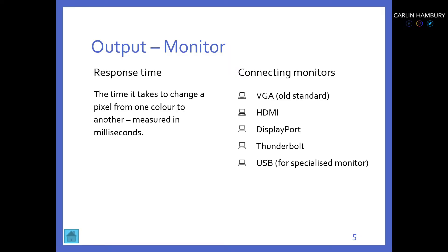So when buying a laptop, monitor, or TV, you want to look at the resolution, the size, the response time, and the ways in which you can connect to it. TVs now have HDMI ports where we can connect another device — a laptop or computer. Some have the old VGA connectors, some have display ports, thunder ports, and some you can connect USB flash drives into. Just a tip: if you're buying a TV with a USB port, ask whether you can watch movies with it, because some TVs with USB ports will only pick up music.